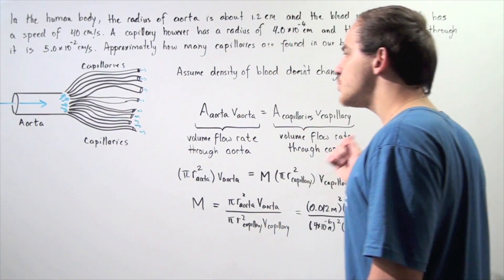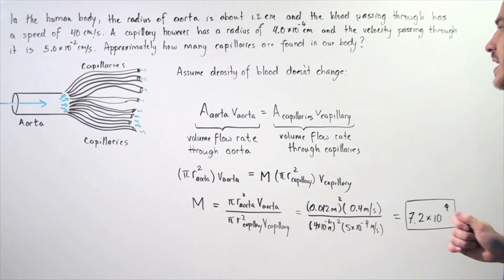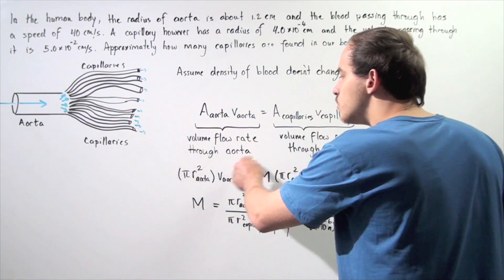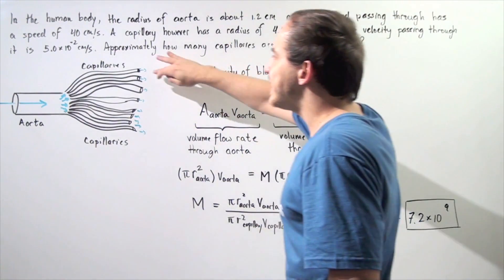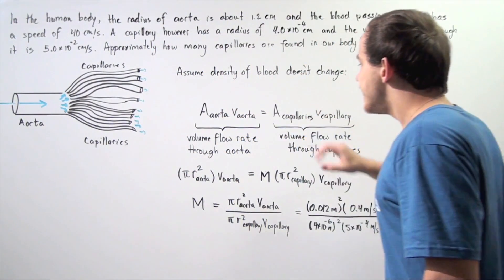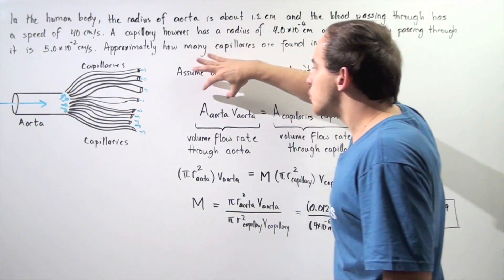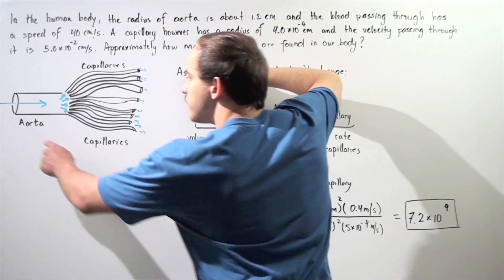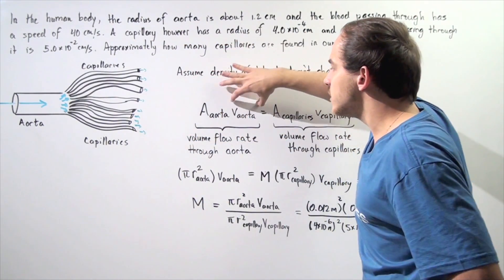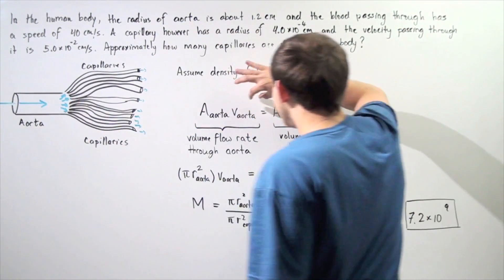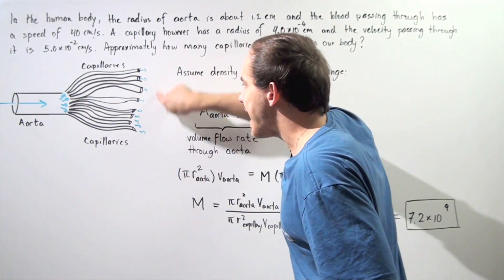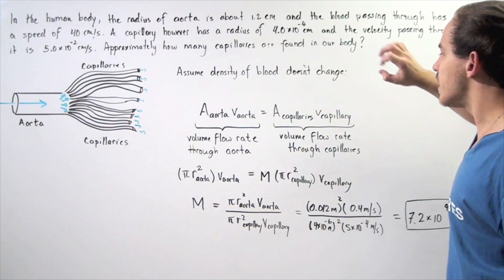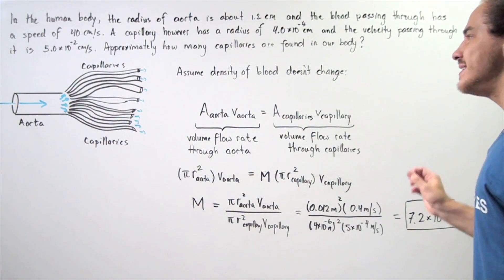Using that, we can use our continuity equation. The continuity equation states that the volume flow rate through our aorta is equal to the volume flow rate through all the capillaries combined. That basically means the product of the cross-sectional area of the aorta and the velocity of the blood through the aorta is equal to the product of the sum of all the cross-sectional areas of the capillaries multiplied by the velocity of blood through a single capillary.